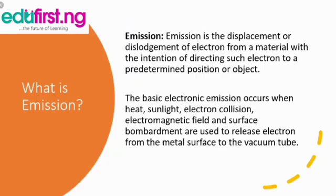What is emission? Emission is the displacement or dislodgement of electrons from a material with the intention of directing such electrons to a predetermined position or object. The basic electronic emission occurs when heat, sunlight, electron collision, electromagnetic field, and surface bombardment are used to release electrons from the metal surface to the vacuum tube.